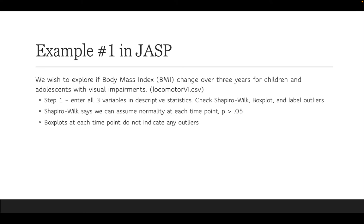The first thing we want to do is start with our assumptions and see if they're met. We're going to enter all three variables in descriptive stats, and we're going to check Shapiro-Wilk and box plot and label those outliers.